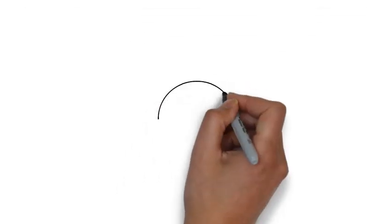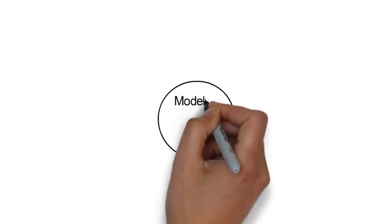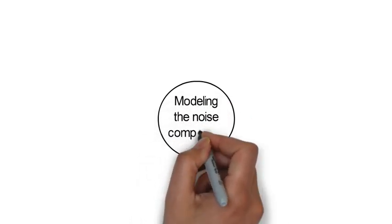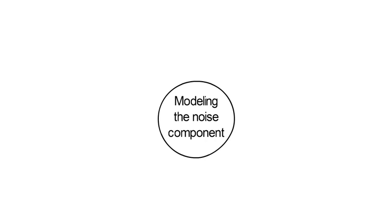Third, in this course we also learn about how to model the noise component epsilon t. We start off with the assumption that epsilon t is a white noise or a Gaussian white noise process.